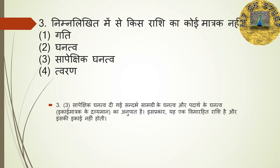अगला question है: निम्नलिखित में से किस राशि का कोई मानक नहीं है? चार options हैं — गति, घनत्व, सापेक्षित घनत्व, त्वरण। इसका right answer है सापेक्षित घनत्व। सापेक्षित घनत्व, दी गई संदर्भ राशि के घनत्व और पदार्थ के घनत्व का अनुपात है — इस प्रकार यह एक विमाहीन राशि है और इसकी कोई इकाई नहीं होती है।